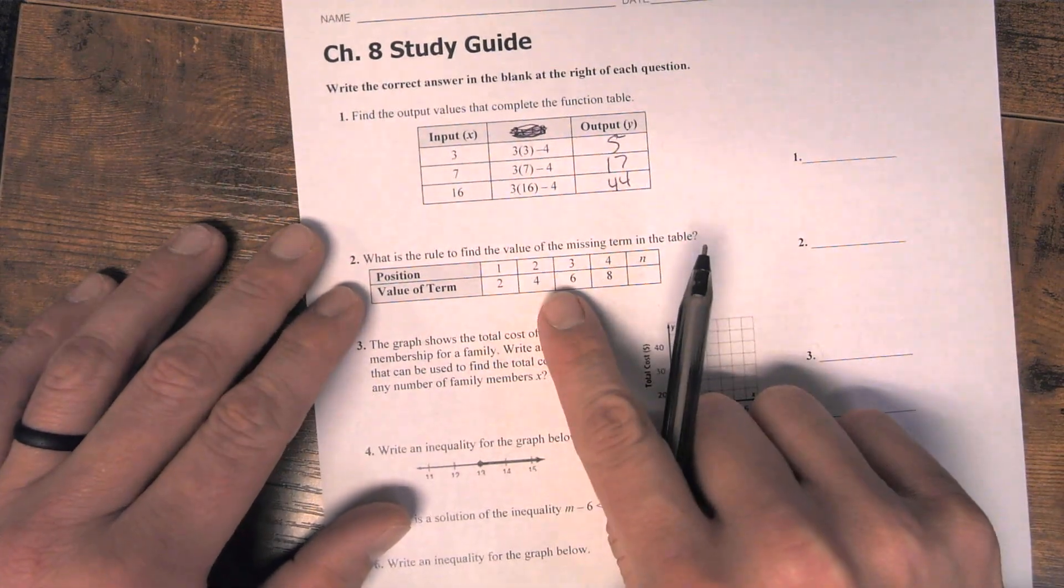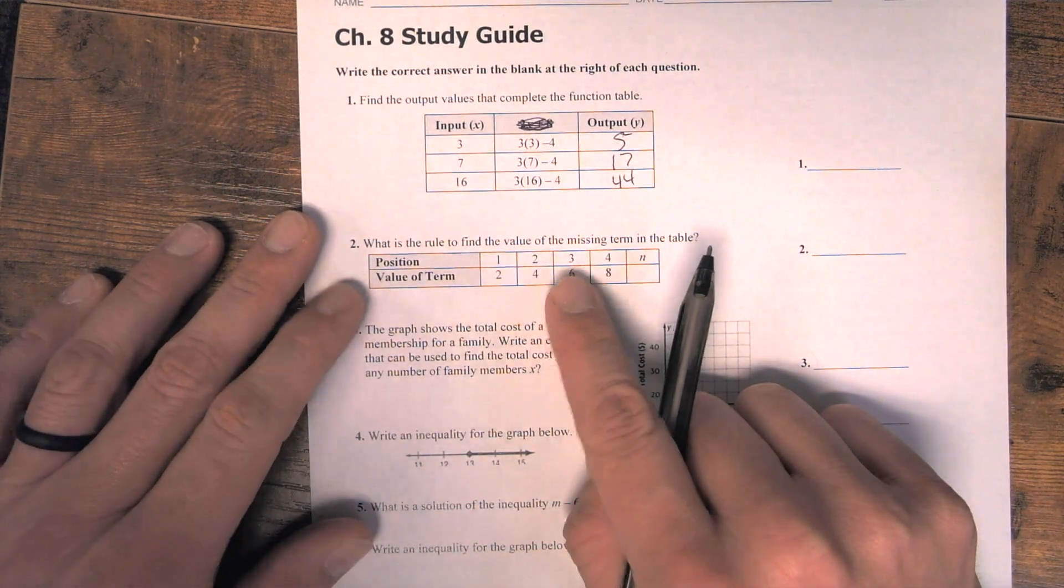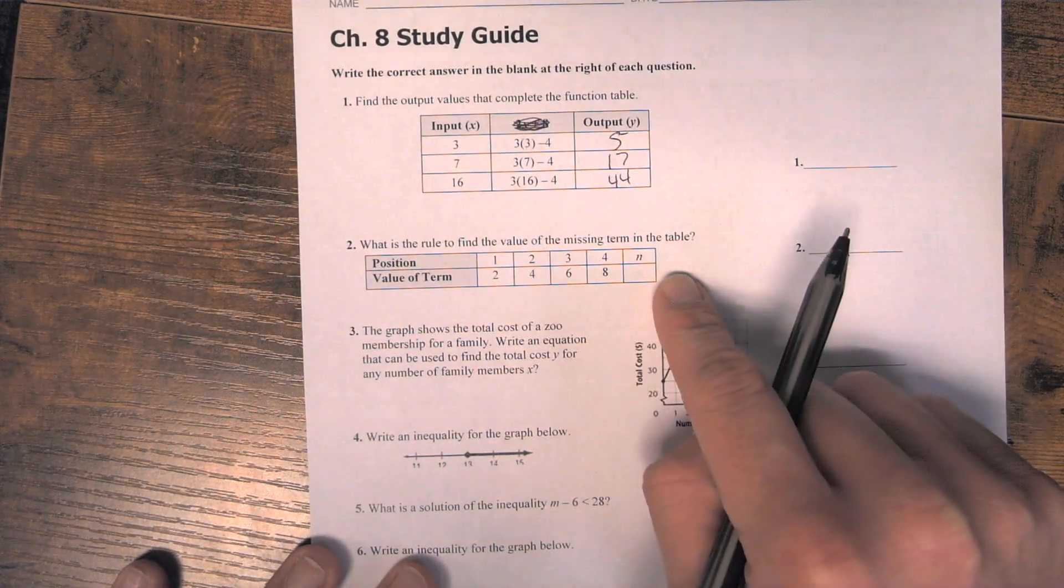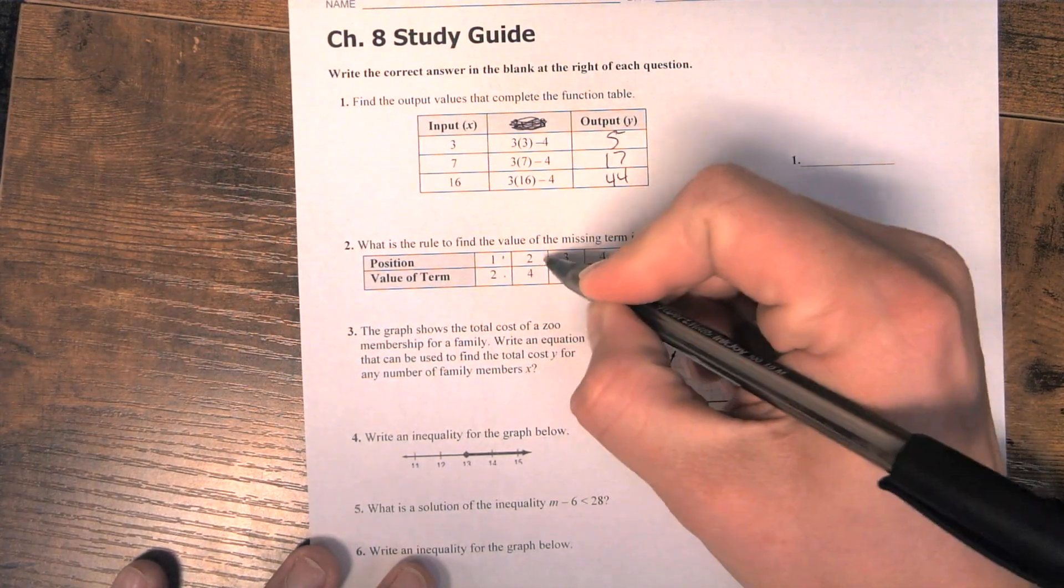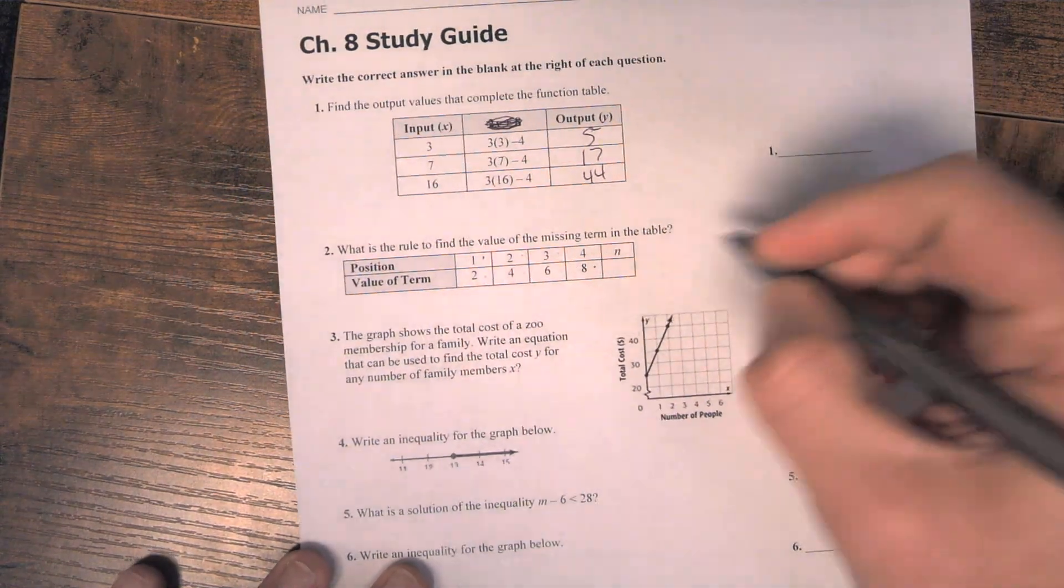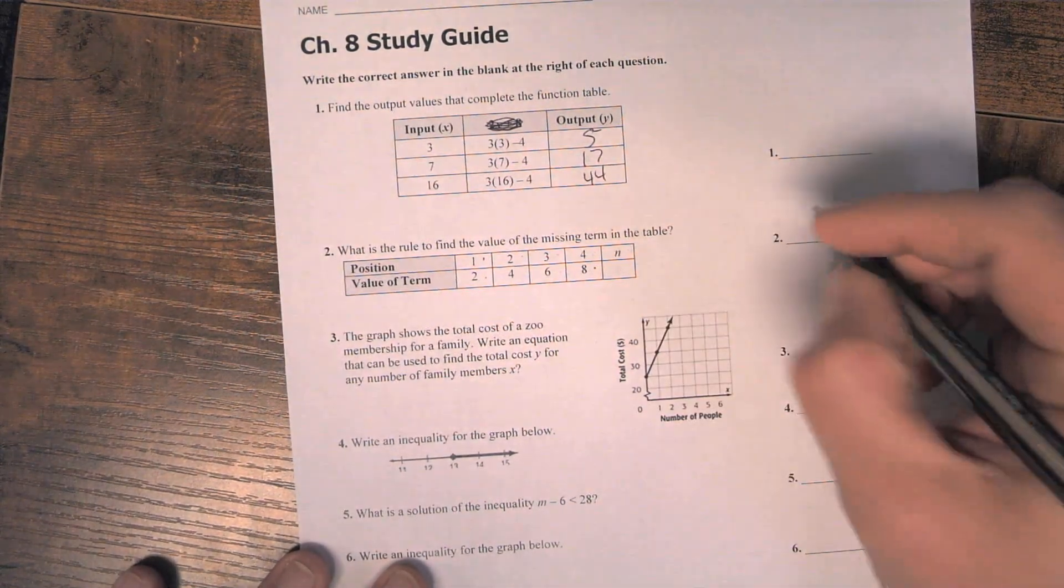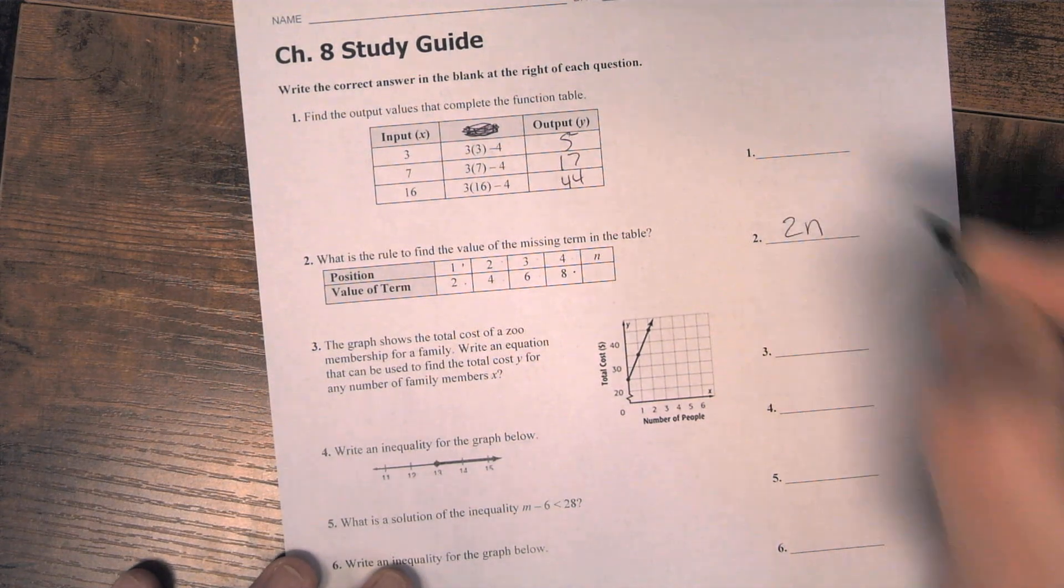Number 2, they want you to find the function rule for the function table. So they're going from 1 to 2, 2 to 4, 3 to 6, 4 to 8. So they're multiplying by 2. So the function rule would be 2n.